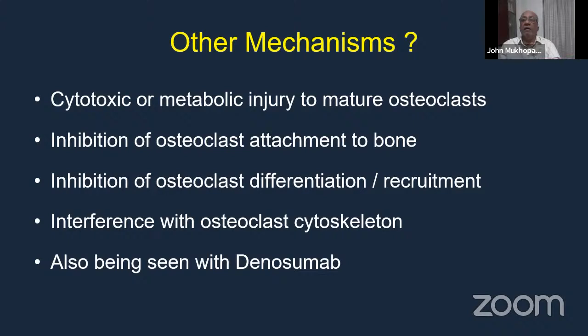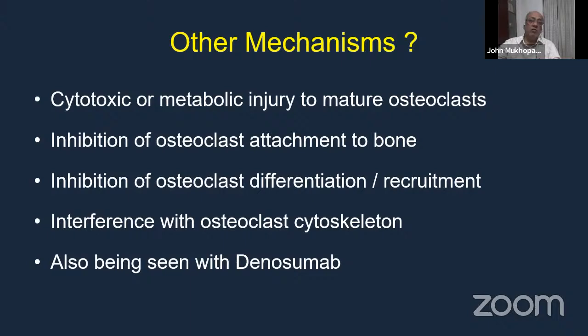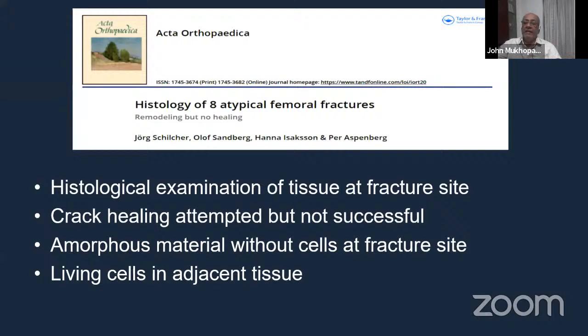We are also seeing atypical fractures with the use of denosumab, which is used for osteoporosis. Initially it was thought denosumab does not cause these problems, but with increasing use we are apparently also seeing these types of fractures. On histological examination at the fracture site, there is attempted but unsuccessful crack healing, and amorphous material without cells at the fracture site. Although living cells exist in adjacent tissue, the fracture area has very little cellular activity, which is why healing gets delayed.